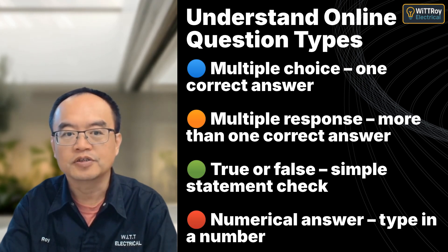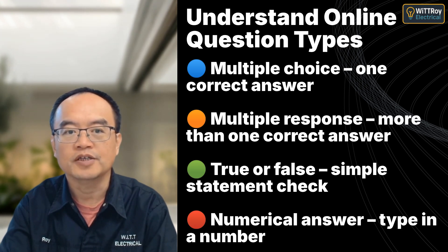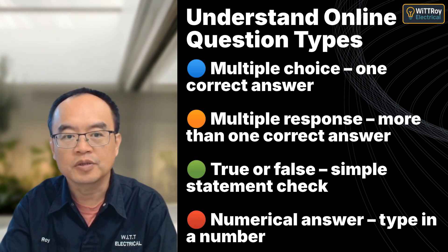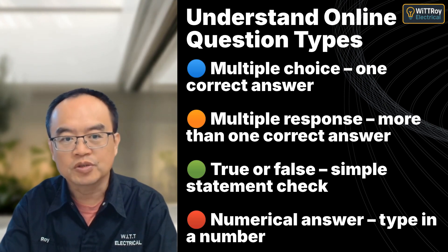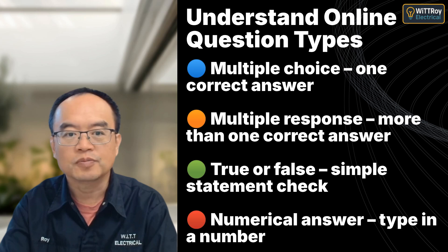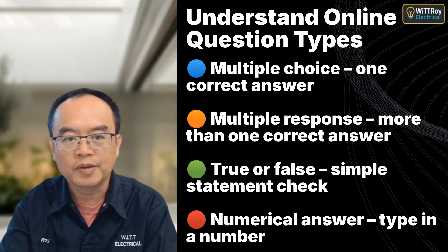For numerical answer questions, two things are very important. Make sure you use the correct number of decimal places, usually one or two. Use the correct rounding method: if the digit after is five or more, round up; if it's four or less, round down. Using the correct format avoids losing marks due to simple rounding or formatting errors.